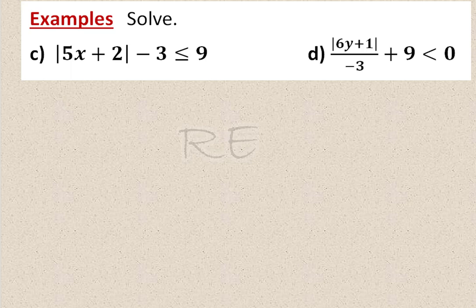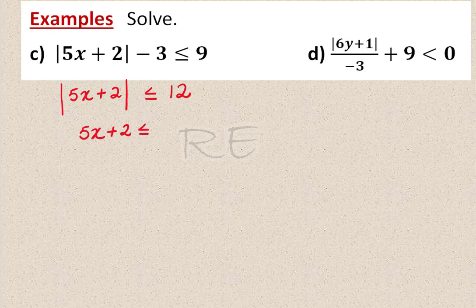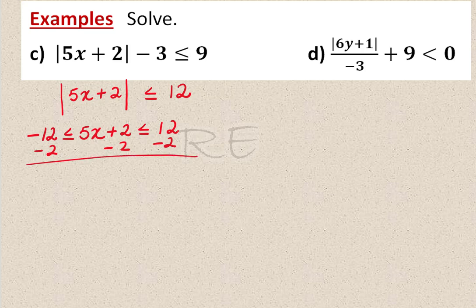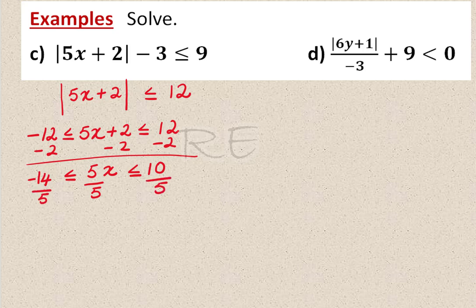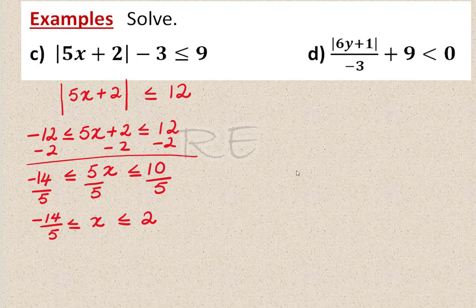The absolute value of 5x plus 2 minus 3 is less than or equal to 9. First, isolate the absolute value: the absolute value of 5x plus 2 is less than or equal to 12. Then 5x plus 2 is between negative 12 and 12. Subtracting 2 from all three sides gives negative 14 less than or equal to 5x less than or equal to 10. Dividing by 5 gives negative 14 over 5 less than or equal to x less than or equal to 2.